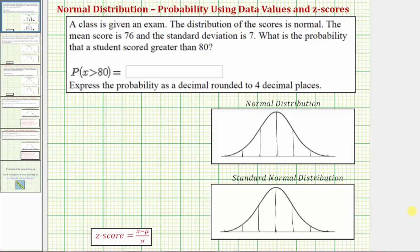Welcome to an example on how to use the TI-84 to determine a probability using the normal distribution. A class is given an exam. The distribution of the scores is normal, the mean score is 76, and the standard deviation is seven. What is the probability that a student scored greater than 80?